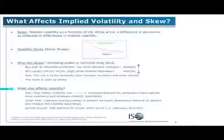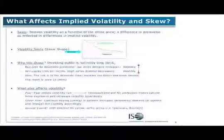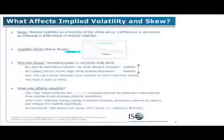With FX options, the skew should be flat because the currency risk is symmetric. So by the order flow — by how much the skew moves up one way or another — it could possibly indicate which way the currency is going to move. It's not definitively proven, but it's something you can try to check out.